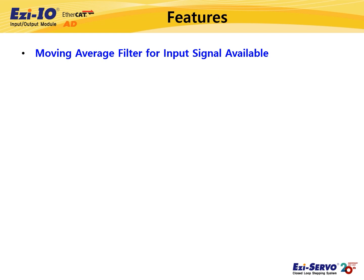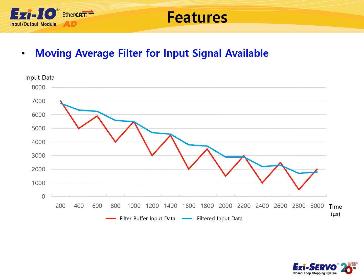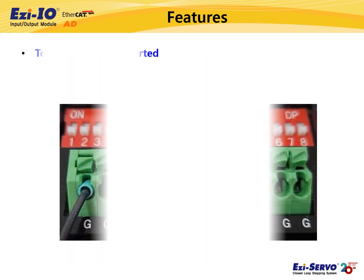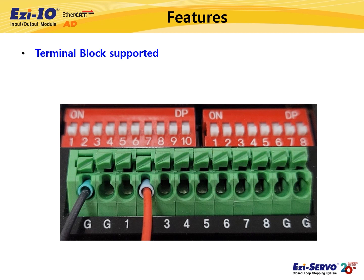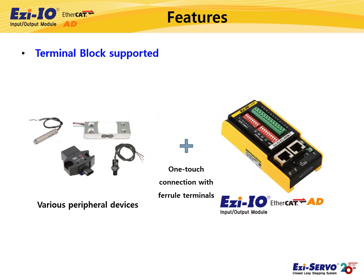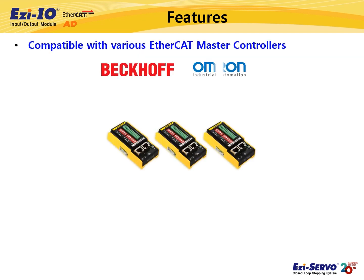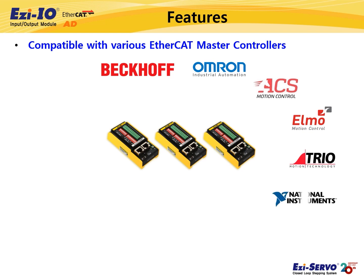For better understanding, I will compare the filter buffer input data and moving average output data with a graph. As you can see, the moving average filter reduces the effect of noise and makes the input data smooth. Easy IO EtherCAT-AD provides terminal block type products. The ferrule terminals enable easy wiring, and analog peripheral devices such as various sensors can be easily connected with one touch. Lastly, Easy IO EtherCAT-AD is compatible with major EtherCAT masters.